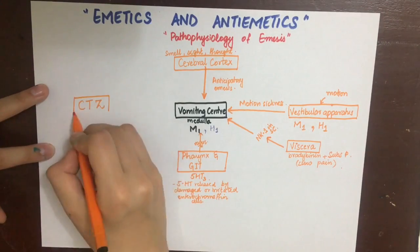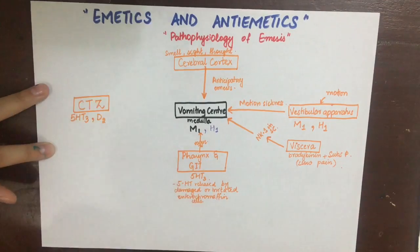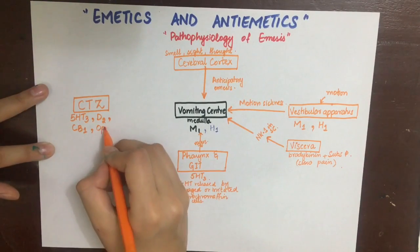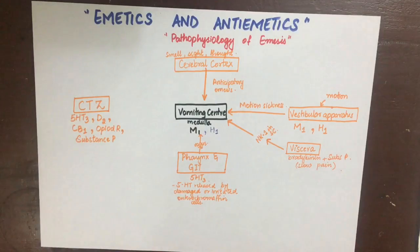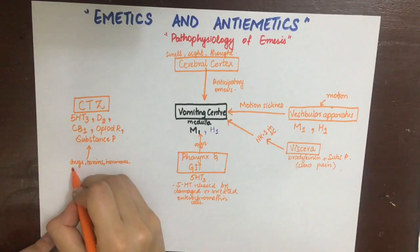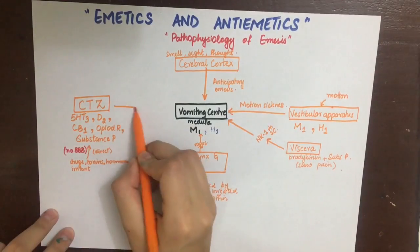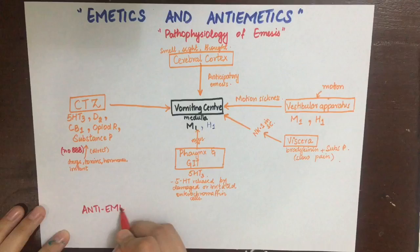The chemo trigger zone is an area of the medulla at the floor of the fourth ventricle which receives input from blood-borne drugs or hormones and communicates with other structures in the vomiting center to initiate vomiting. The receptors present in the CTZ are serotonin receptors, D2 receptors, cannabinoid receptors, opioid receptors, and substance P. They can be stimulated by drugs, toxins, hormones, and any sort of irritants because there is no blood-brain barrier at CTZ. CTZ directly stimulates the vomiting center to cause vomiting.